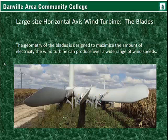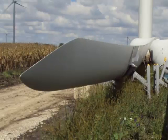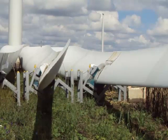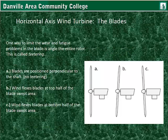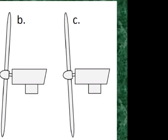The geometry of the blades is designed to maximize electricity production over a wide range of wind speeds — larger at the root, getting smaller towards the tip, and also twisted. One way to limit wear and fatigue on the blade is the angle of the entire rotor, called teetering. Blades can be positioned perpendicular to the shaft — no teetering — or tilted with the shaft angled upward when wind flexes the blade at the top half of the swept area, or shaft tilted downward when wind flexes the blade at the bottom.